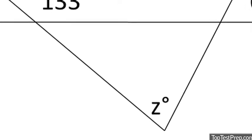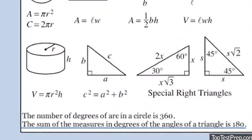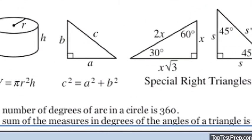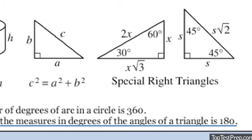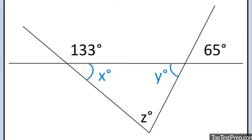Here, we see that Z is actually one angle in a triangle. Looking back at our formula box, we know that the sum of the measures in degrees of the angles of a triangle is 180. Let's label the other two angles X and Y. This means that Z plus the other two angles inside the triangle equals 180. We can find angle X because of a different rule, one that isn't provided by our formula box.